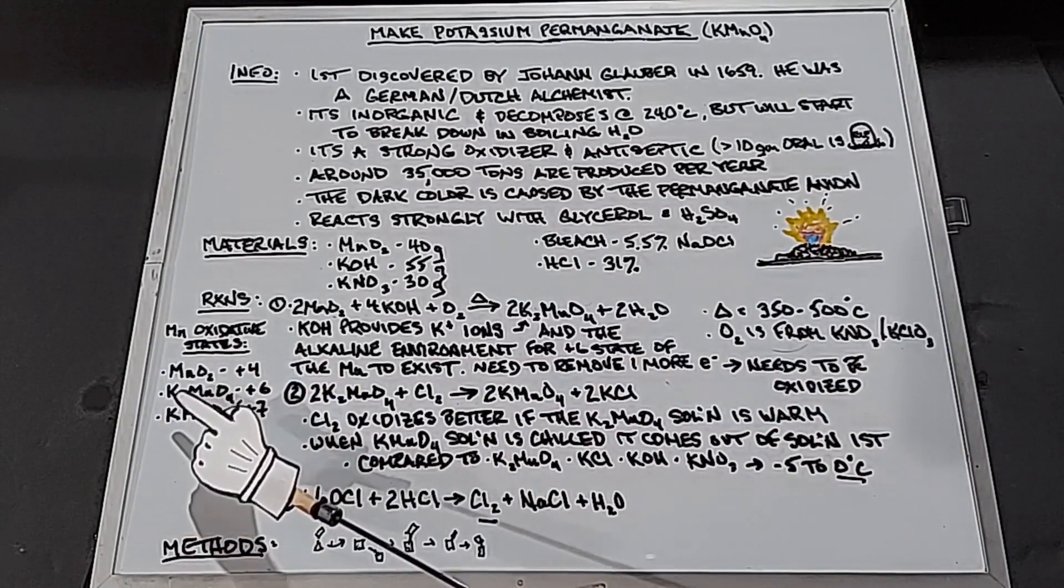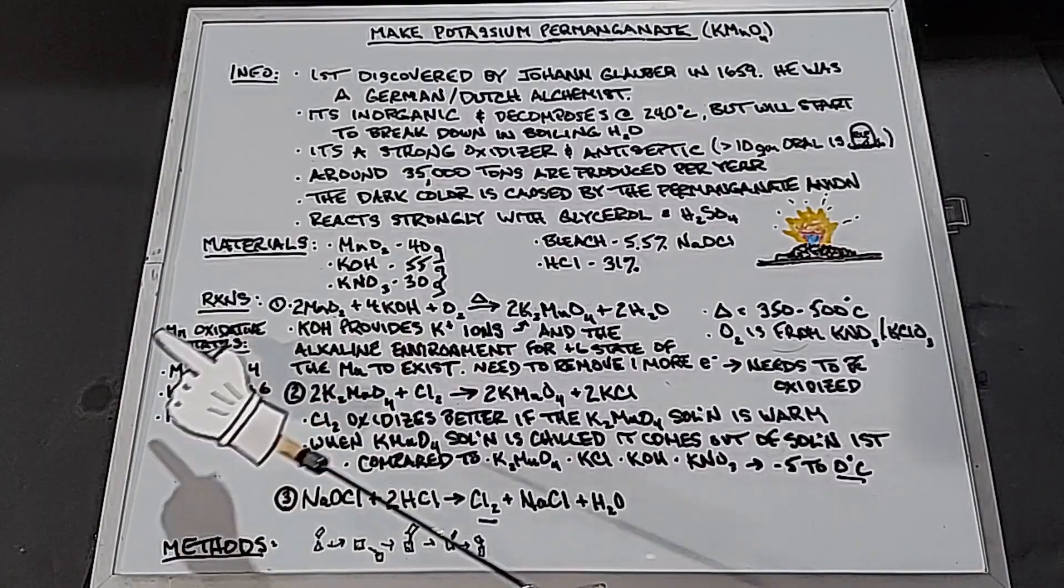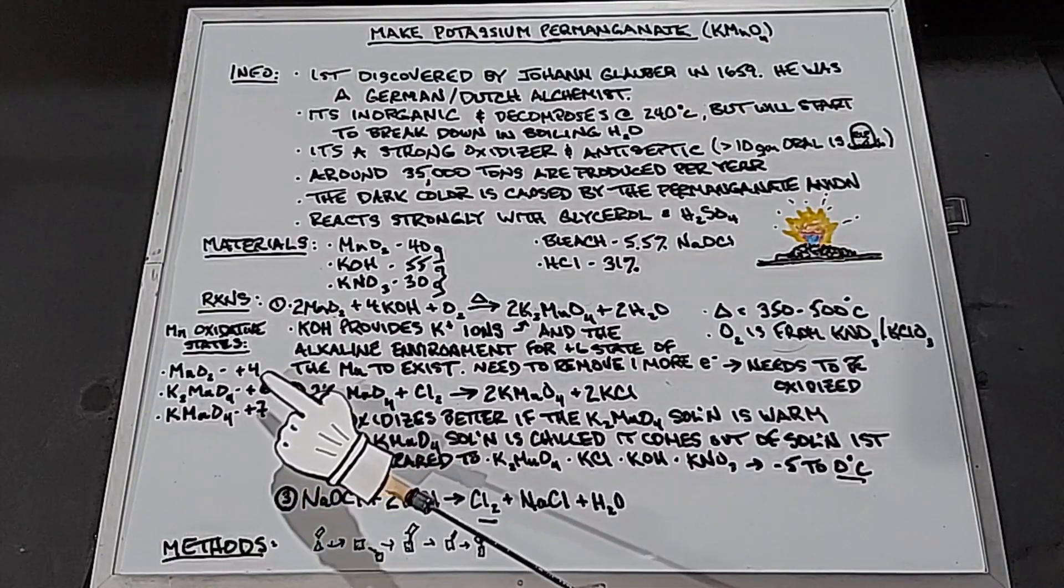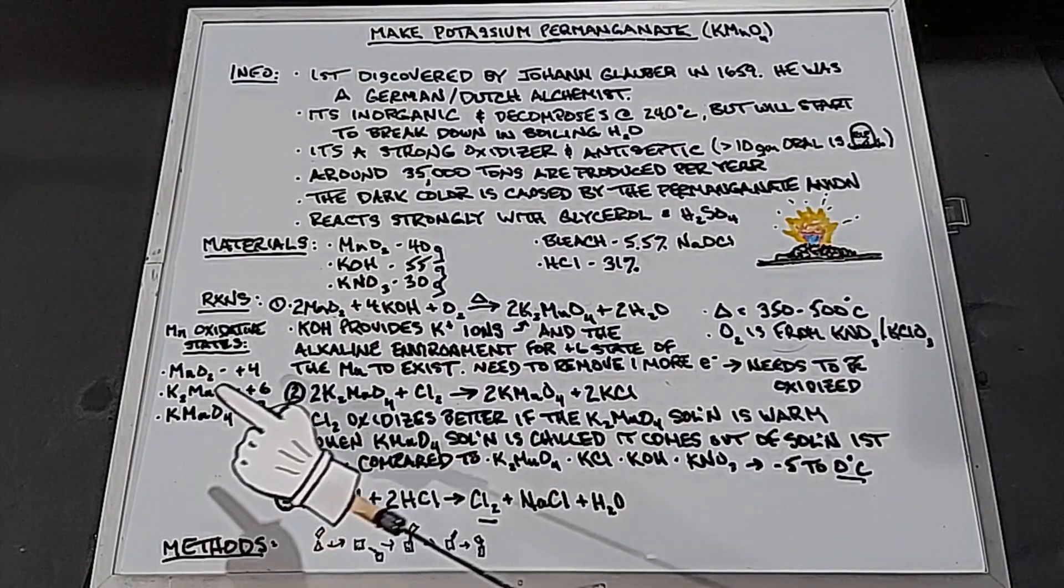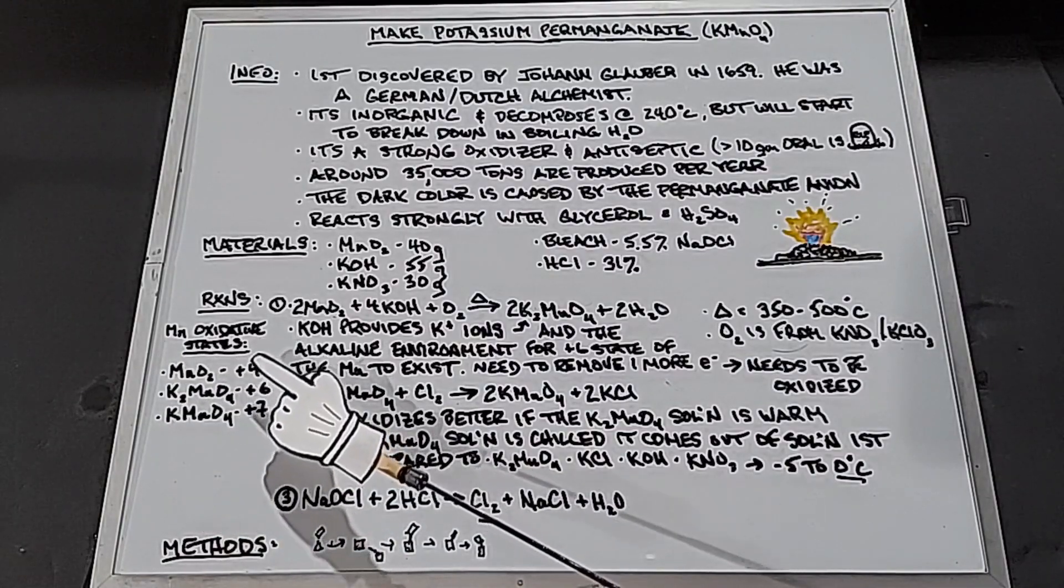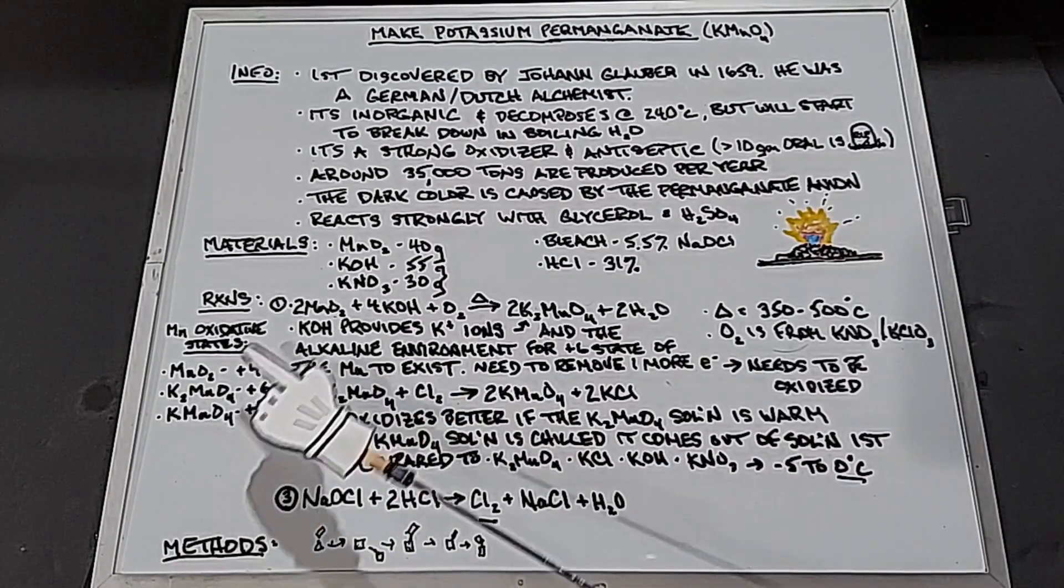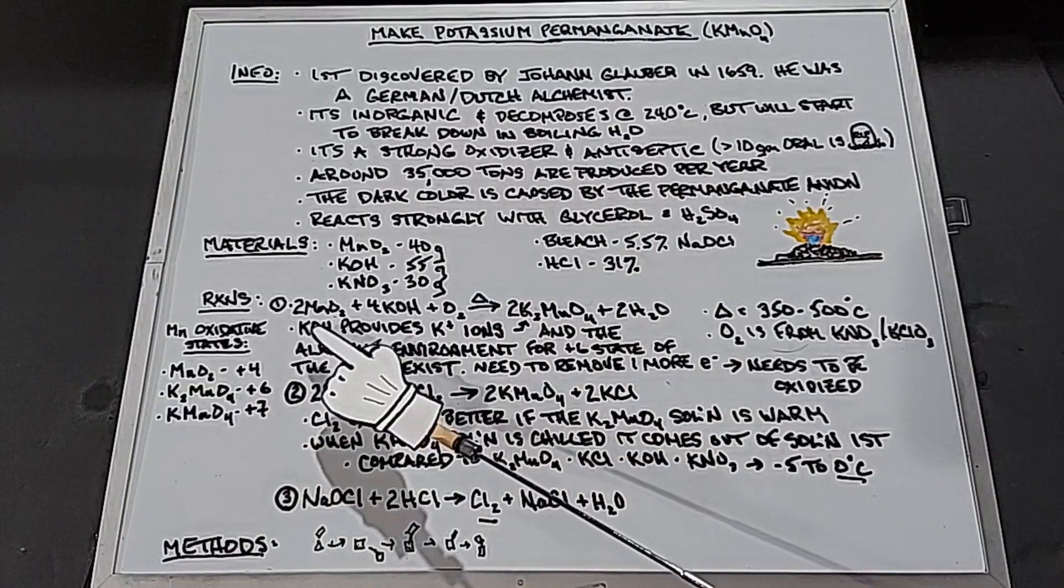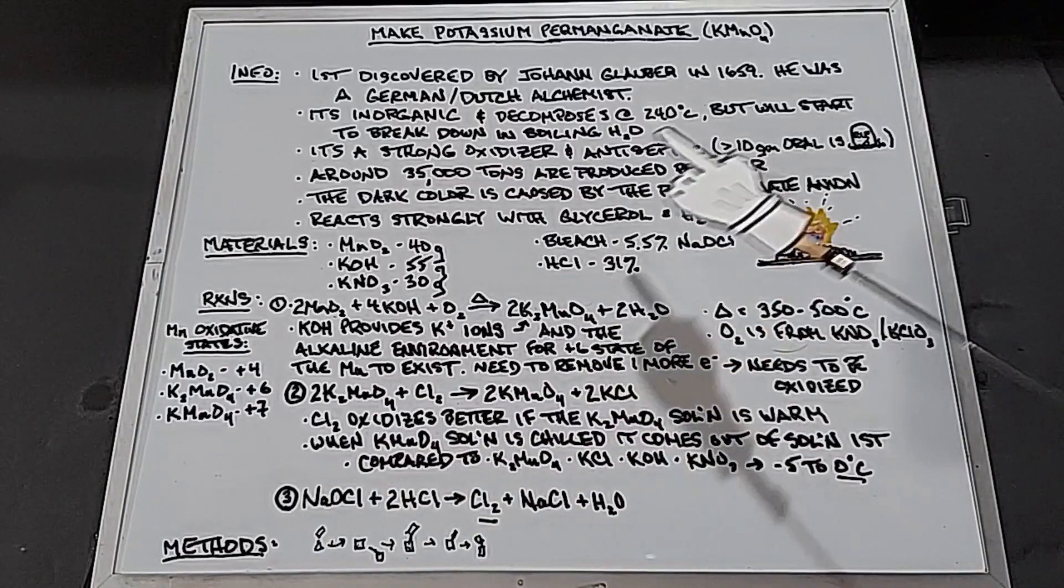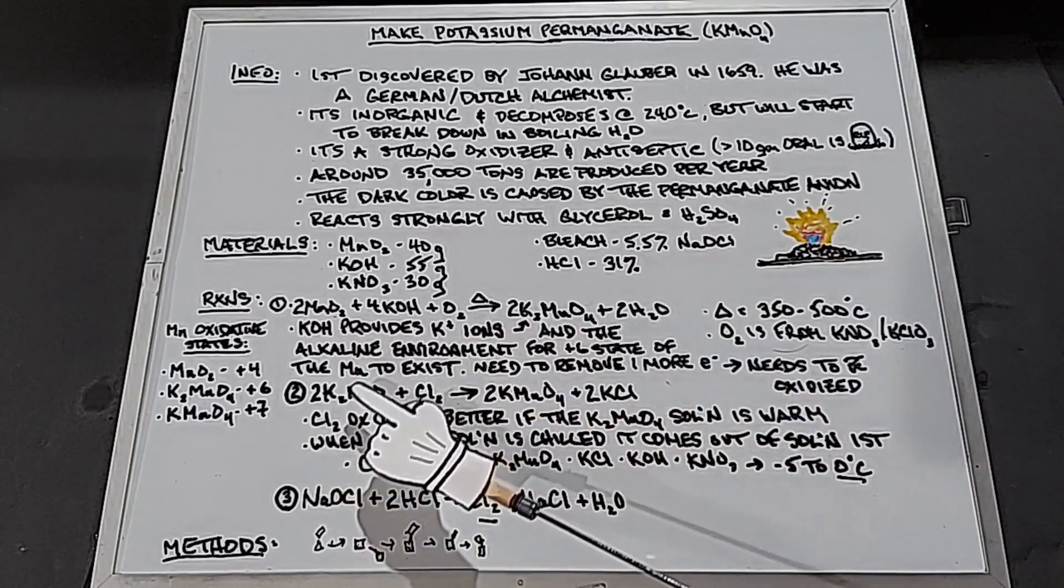Before I go any further, I want to go over the manganese oxidative states. In manganese dioxide, manganese ion is in the plus four state. In potassium manganate, it's in the plus six state, and in potassium permanganate, it's in the plus seven state. As we go from manganese dioxide, we continue to lose electrons, increasing the positive charge of the manganese ion. The potassium hydroxide provides the potassium ions for the potassium manganate and an alkaline environment for the plus six state to exist.